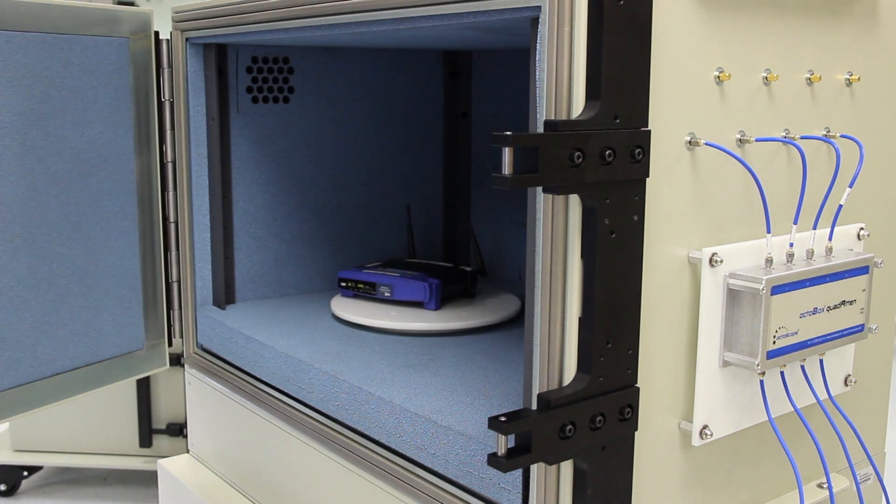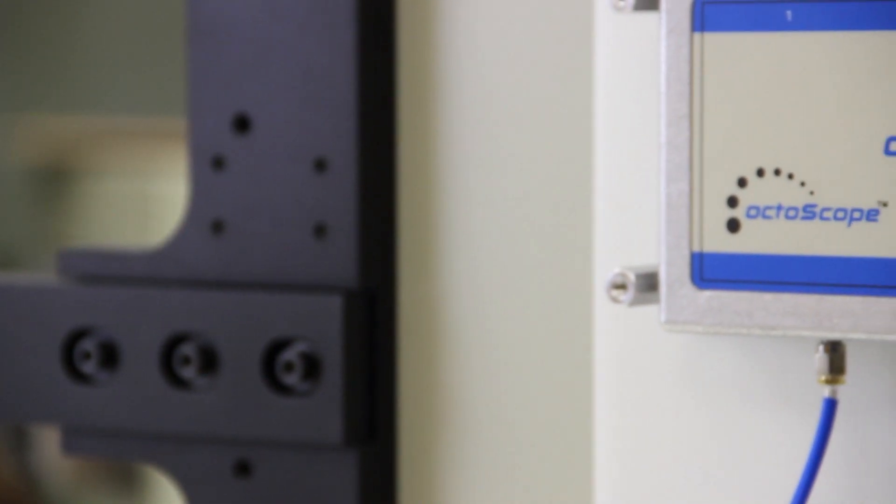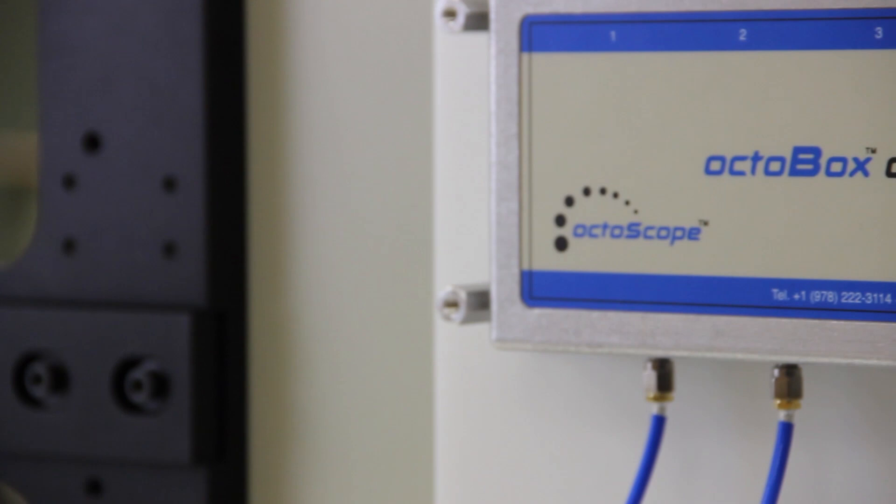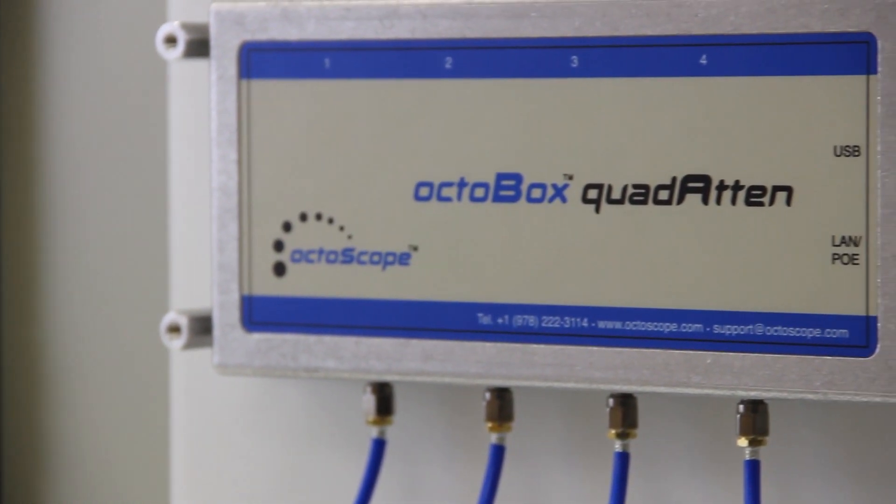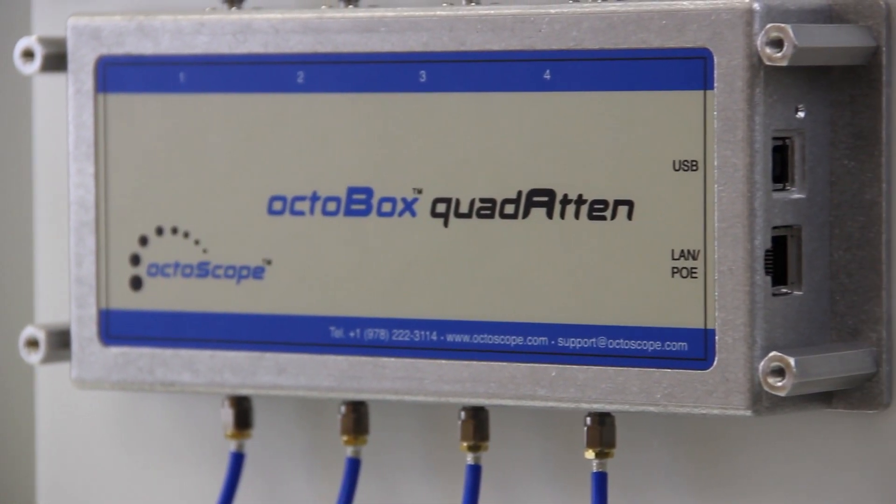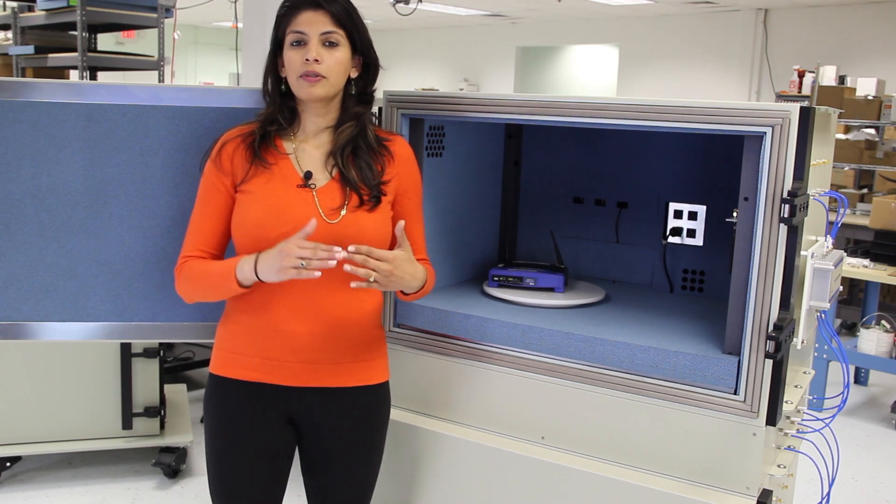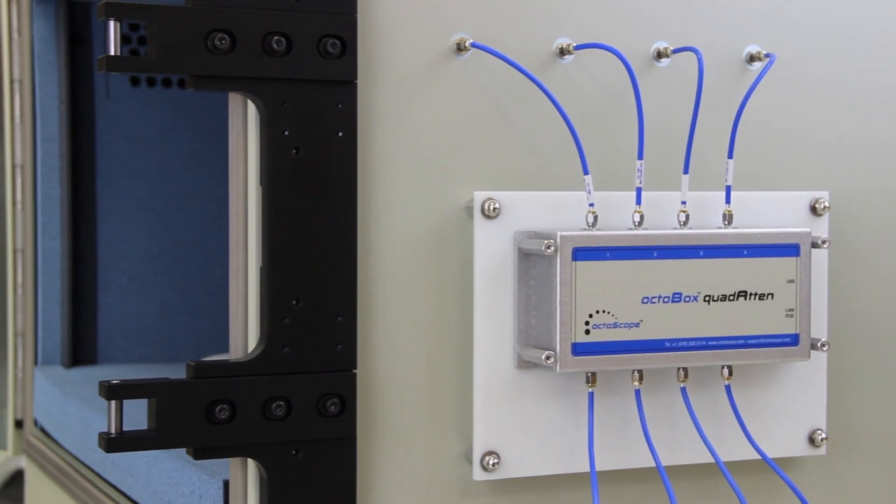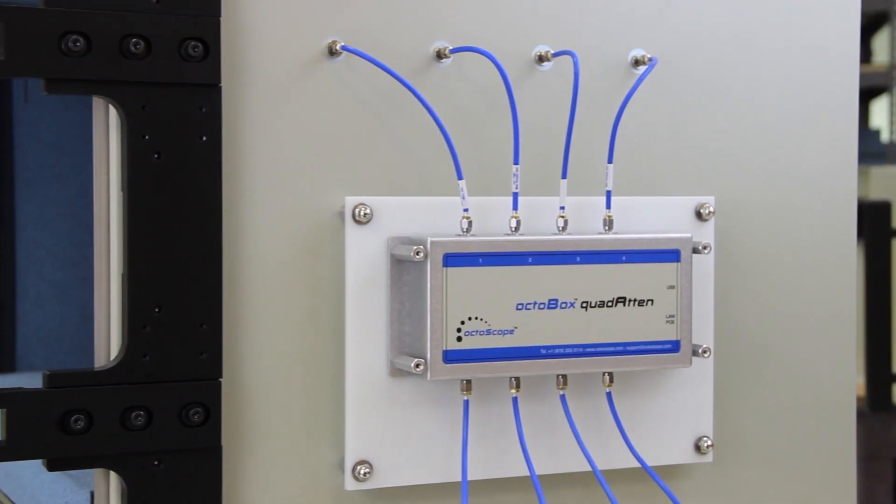Each of the 4 attenuators in a module can be independently controlled or programmed via USB or Ethernet. The attenuator range from 0 to 63 dB with steps of 0.5 dB provides an accurate and broad sweep of receiver dynamic range down to the lowest levels.